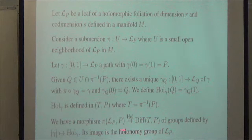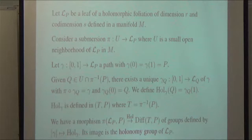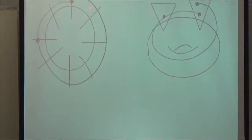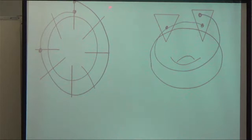The image is what we call the holonomy group of the leaf. For instance, if the leaf is compact, this is going to be a finitely generated group of local diffeomorphisms. This is essentially the analog of the Poincaré first return map — it is more or less the generalization of that.